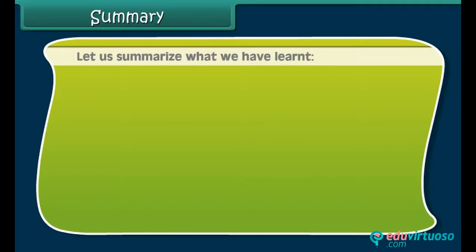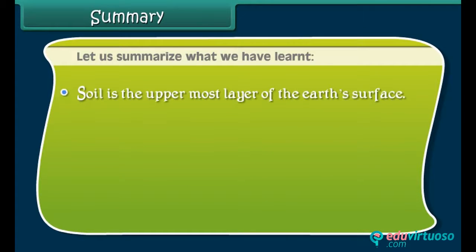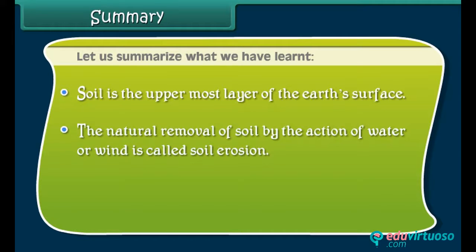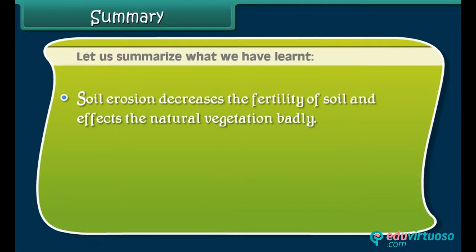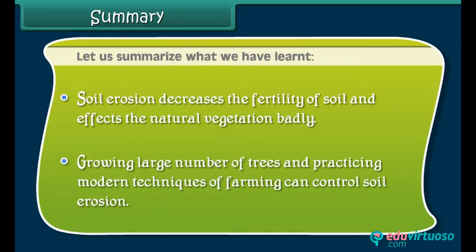Summary: Soil is the uppermost layer of the earth's surface. The natural removal of soil by the action of water or wind is called soil erosion. Water and wind movements, along with human activities, are responsible for soil erosion. Soil erosion decreases the fertility of soil and affects natural vegetation badly. Growing a large number of trees and practicing modern techniques of farming can control soil erosion.